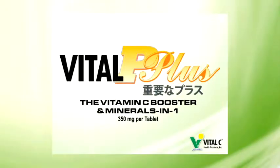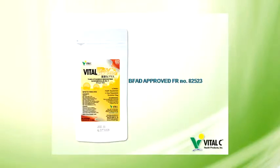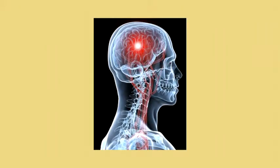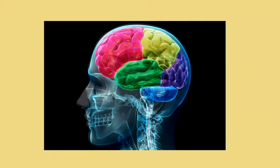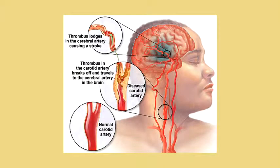That's why when you take Vital P Plus, it will strengthen your capillaries, which are very sensitive and fragile, which causes bleeding and sometimes bursting of blood vessels. If there's bursting in the blood vessels of the brain, it may cause stroke. So our Vital P Plus is very efficient in that order.